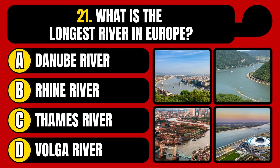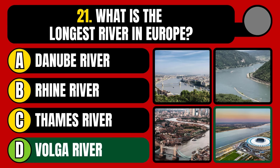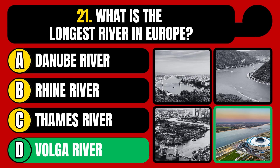What is the longest river in Europe? Danube River, Rhine River, Thames River, or Volga River? The correct answer is option D, Volga River.